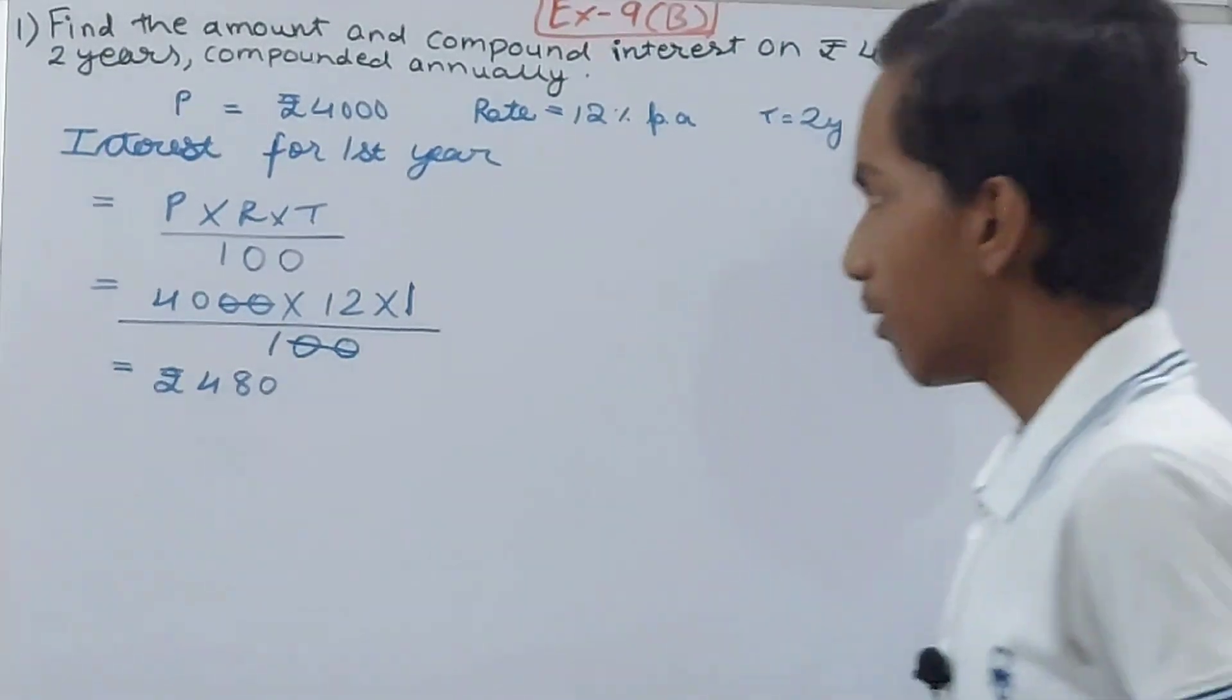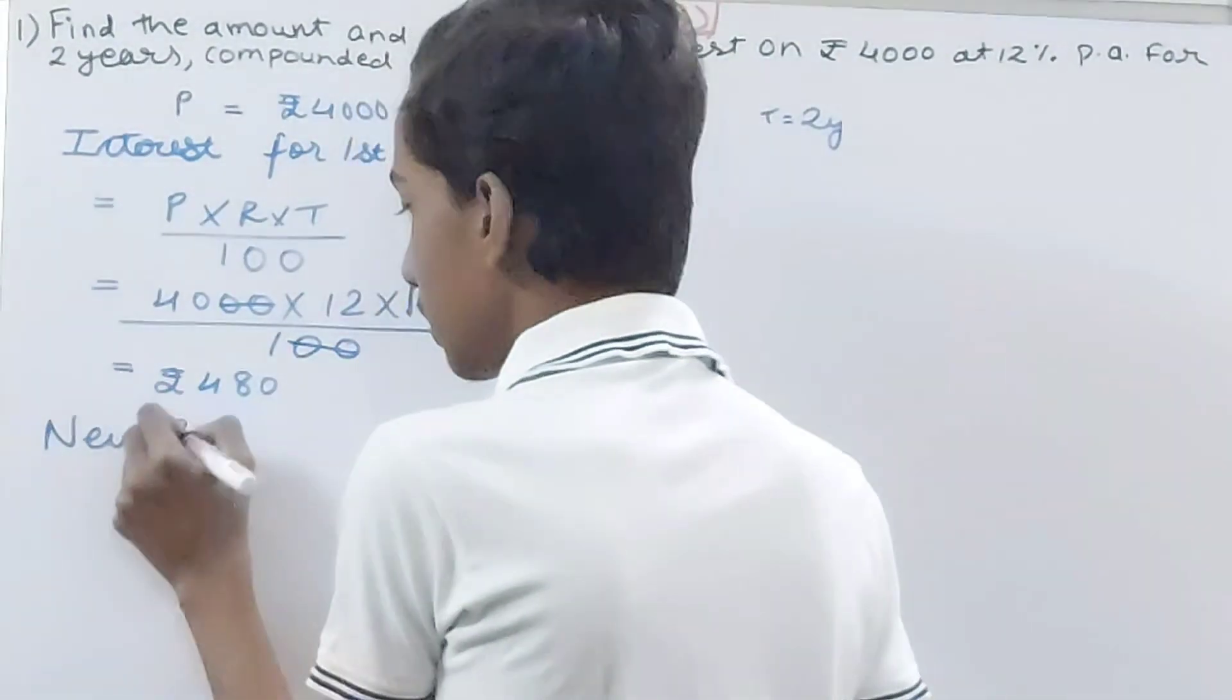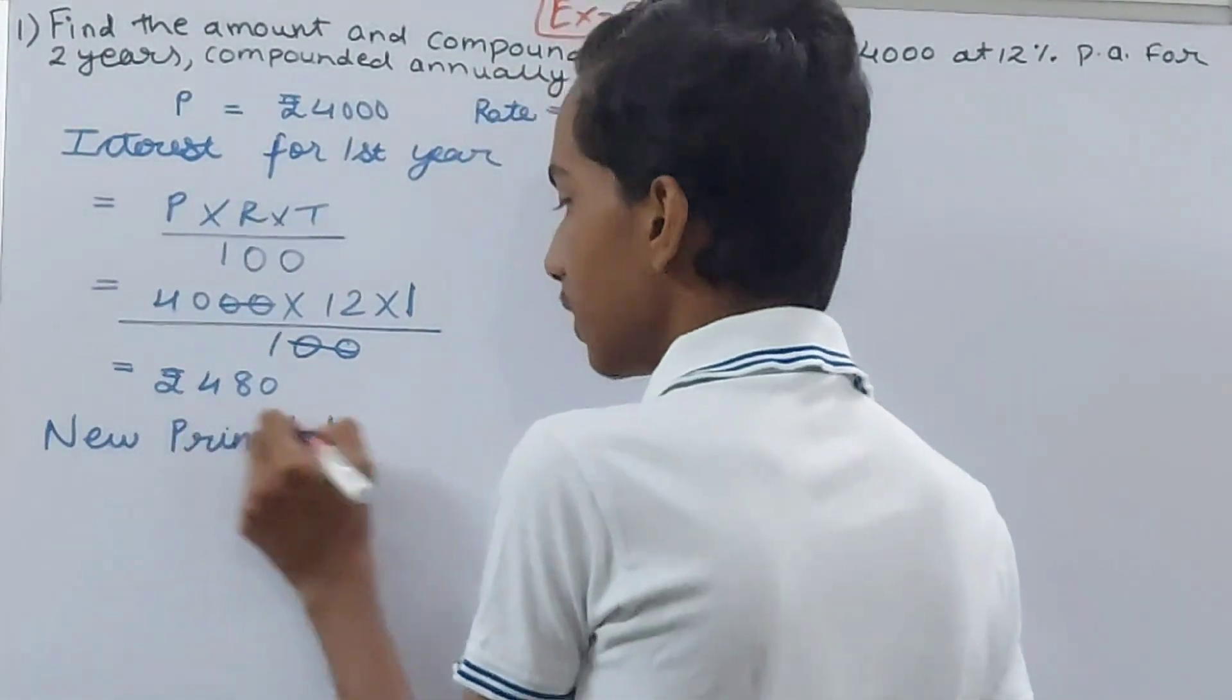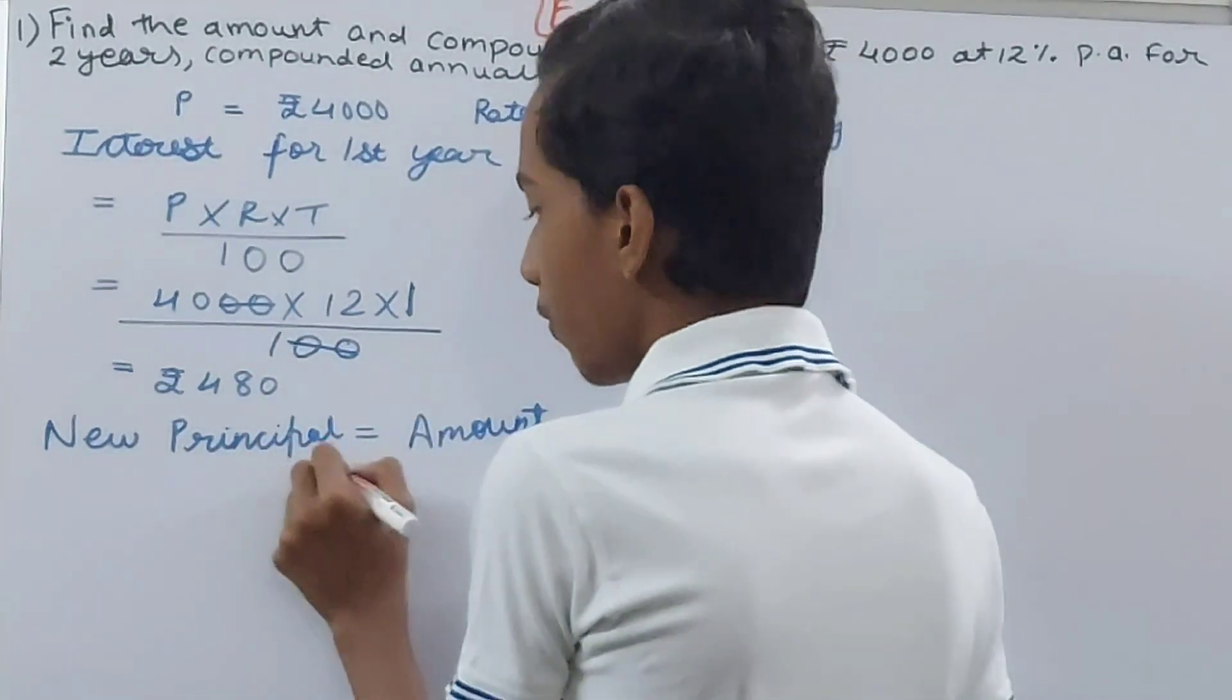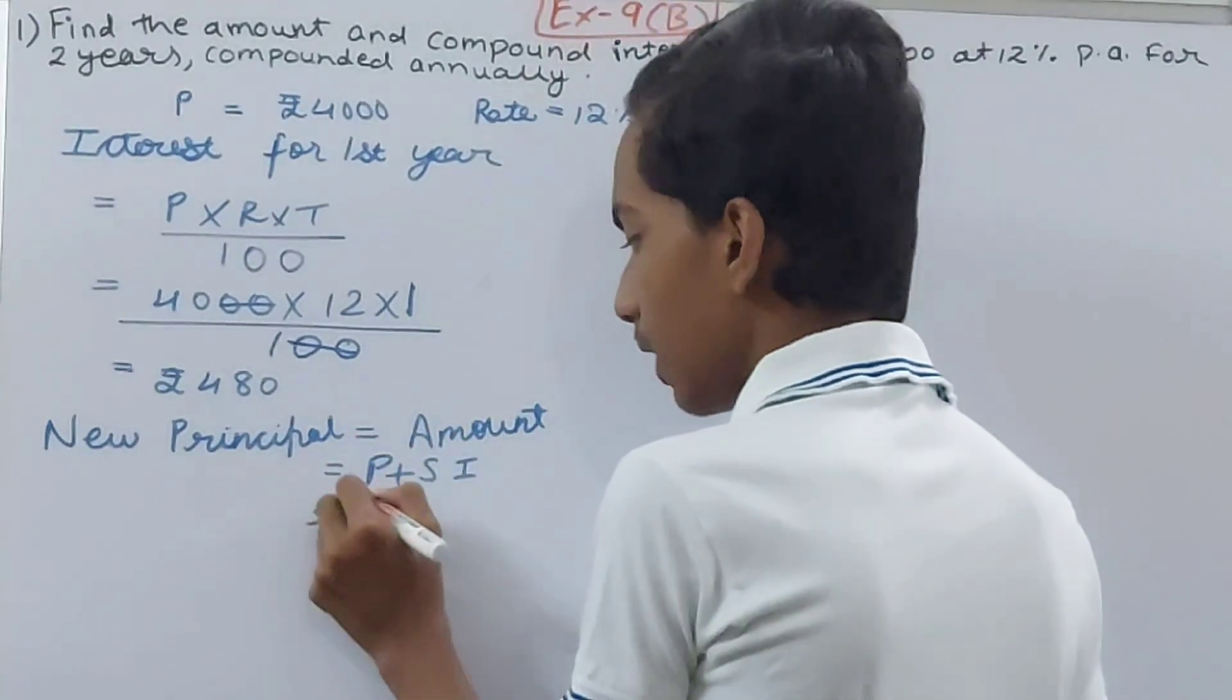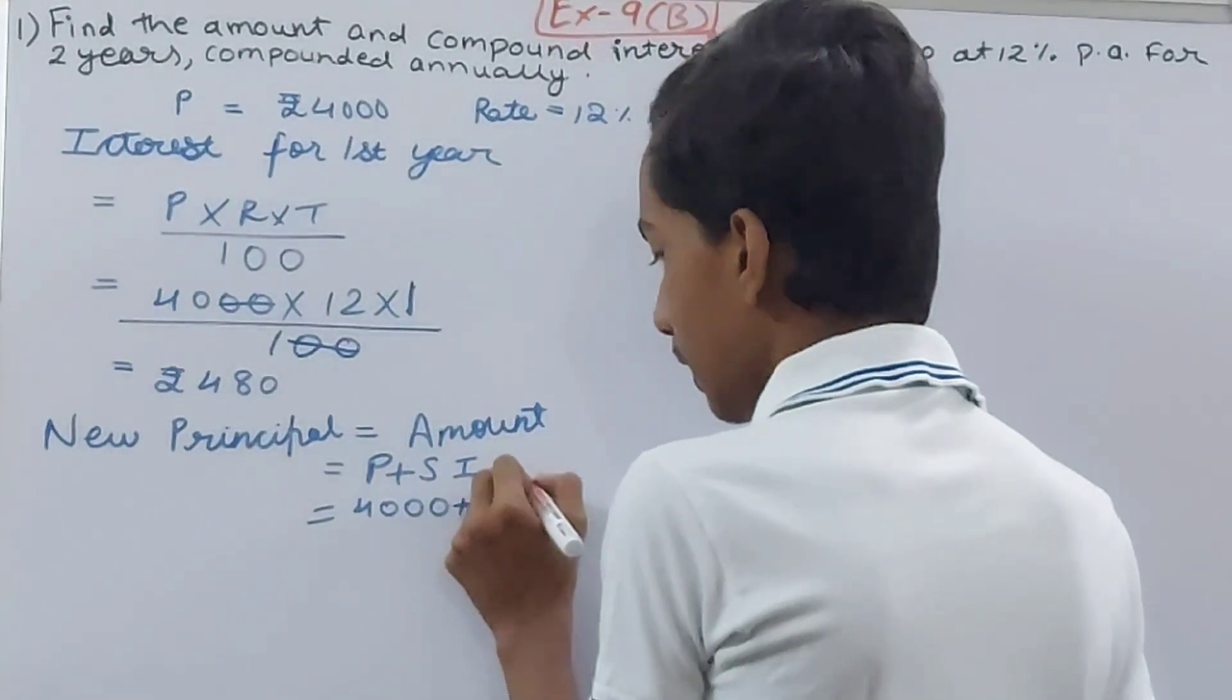But what separates it from simple interest is—now we will calculate the new principle. That will just be equal to your amount. We know the formula of amount: that is Principle + Interest. So do that—you have 4000 + 480, which is 4480 rupees. This is the new principle that we will use.